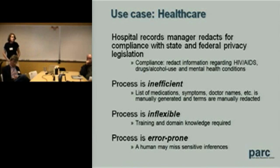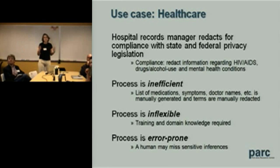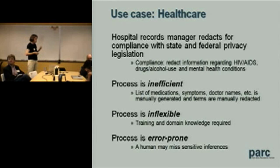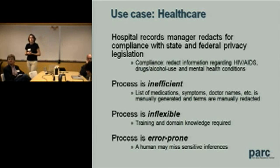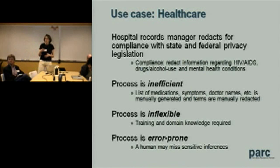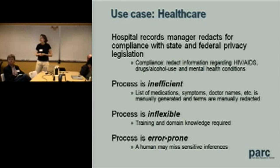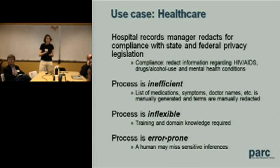In the healthcare space, they interpreted the legislation to mean three categories of information need to be protected: HIV or AIDS, drug or alcohol use, and mental health conditions. The folks we talked to knew they needed to go beyond obvious keywords like 'HIV' or 'alcoholism' in a medical record. They were actually maintaining long lists of medications commonly prescribed for those diseases, psychiatrist names, even symptoms. When producing a medical record, they would first redact it against this list — very time-consuming and potentially error-prone. We wanted to understand how our technique might help.